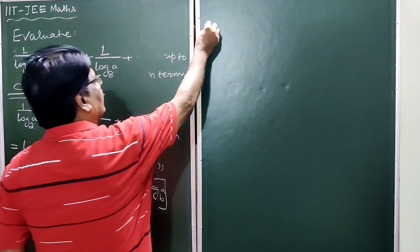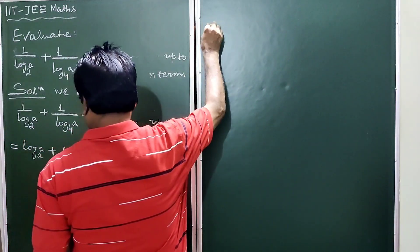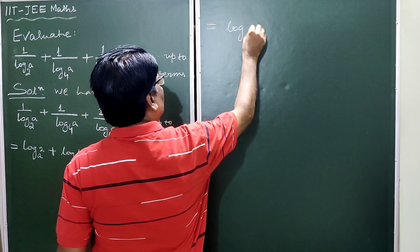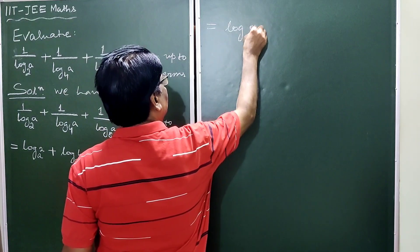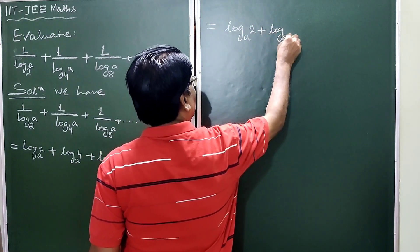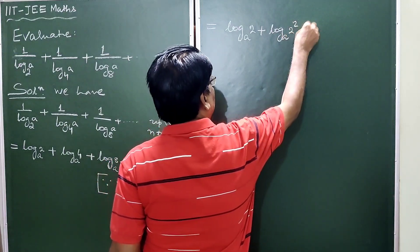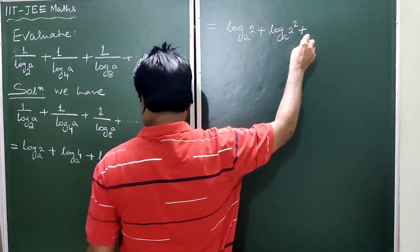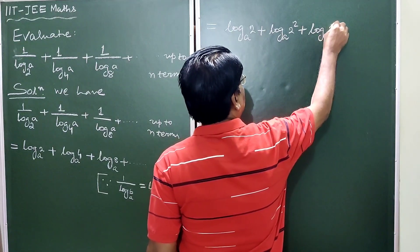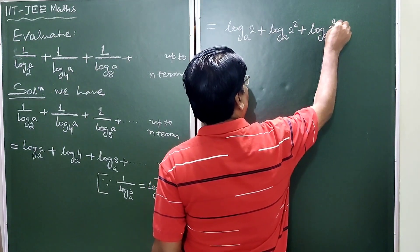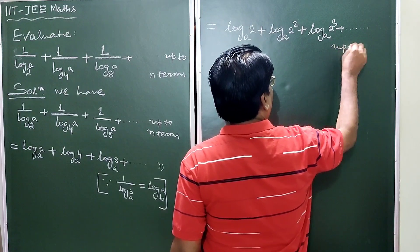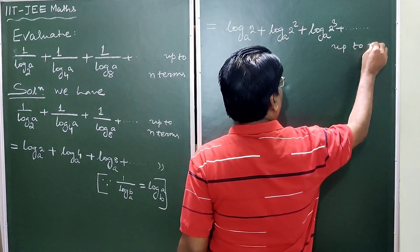So this is equal to log base a of 2, plus log base a of 2 squared, plus log base a of 2 cubed, and so on up to n terms.